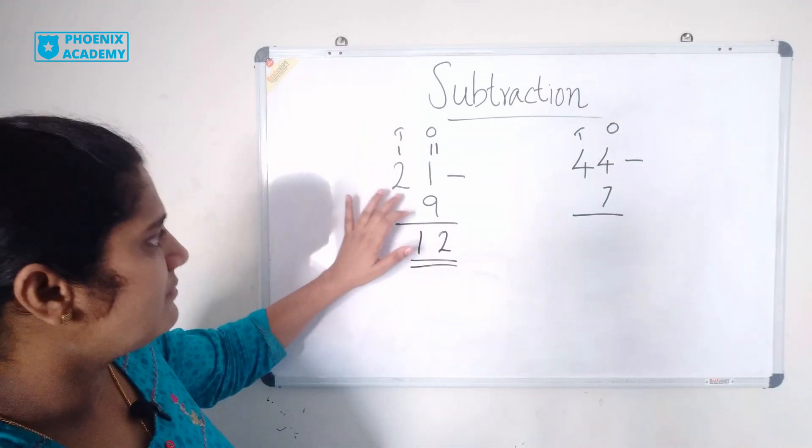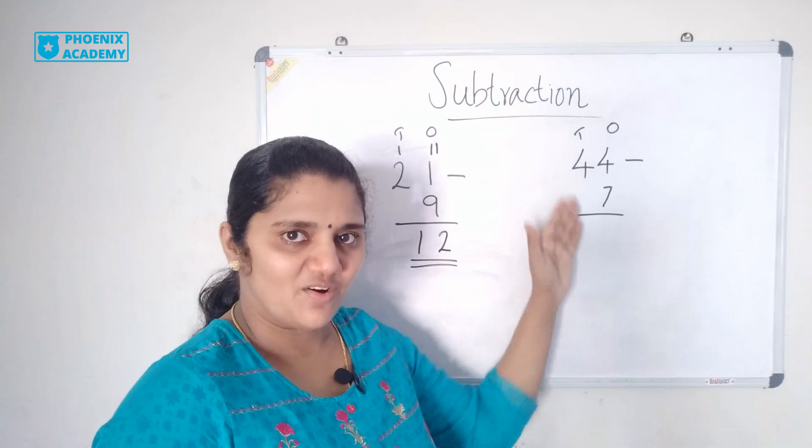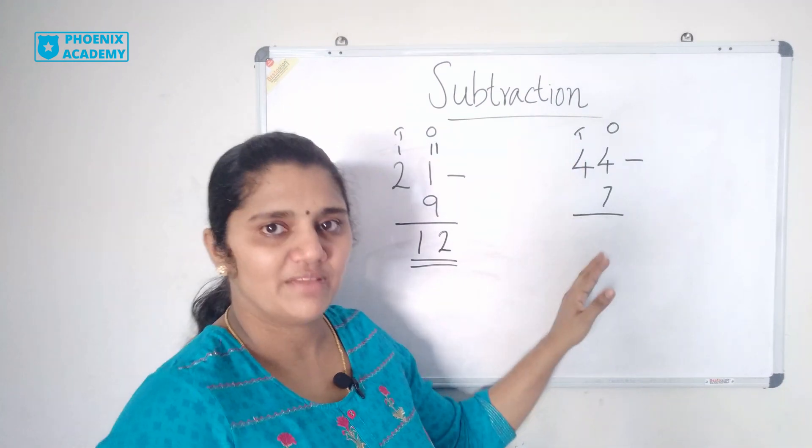So 21 minus 9 is 12. Let's solve this example. 44 minus 7.